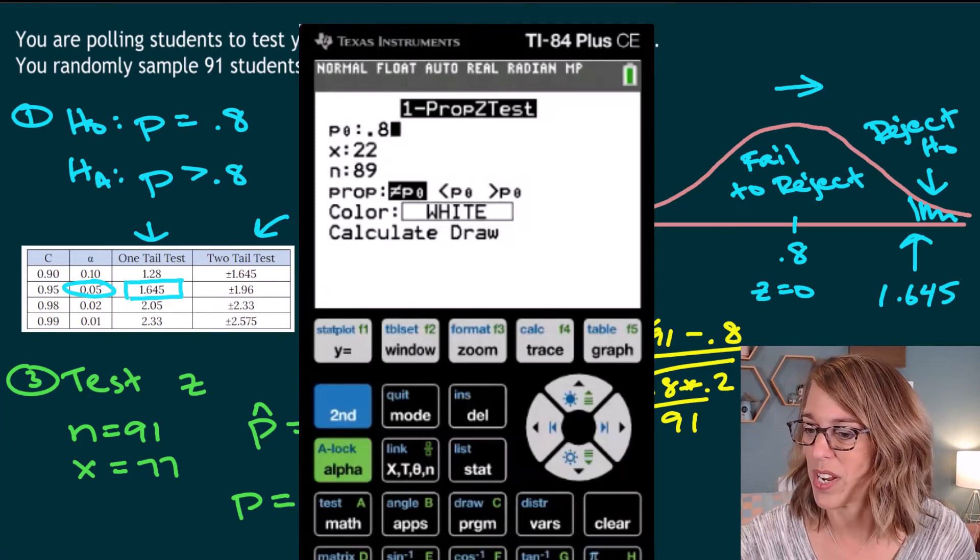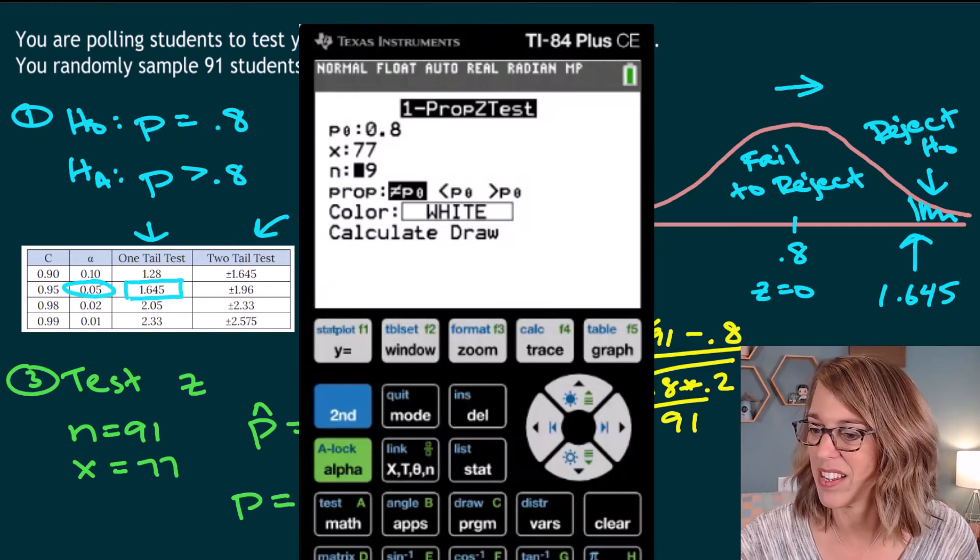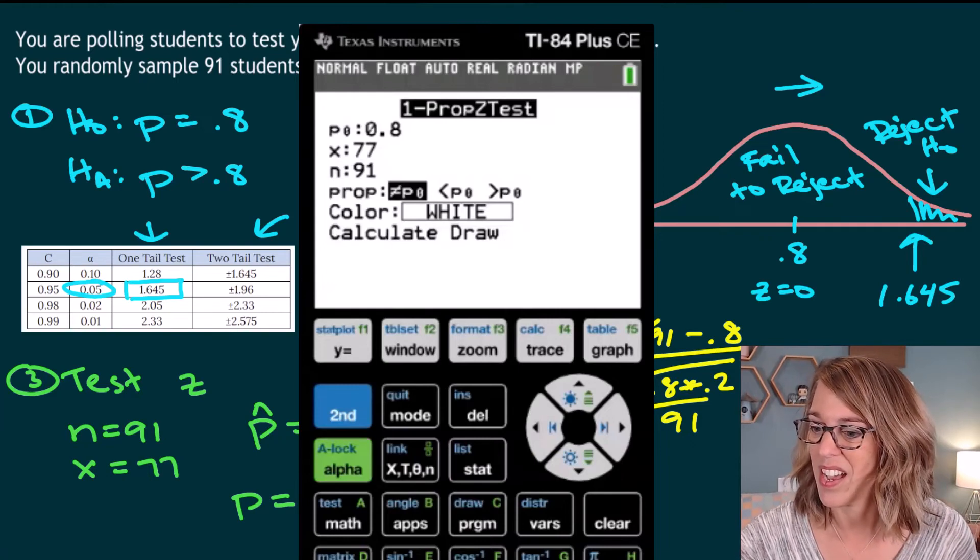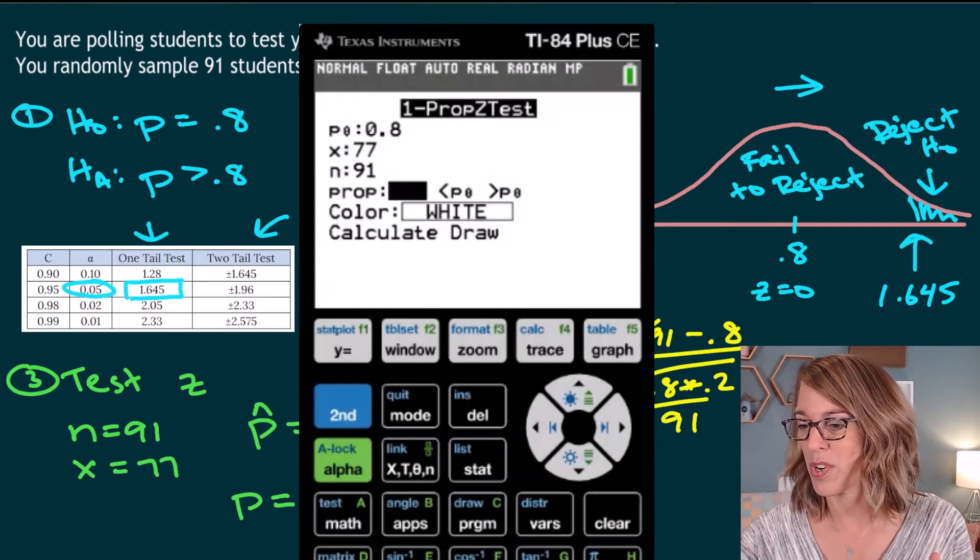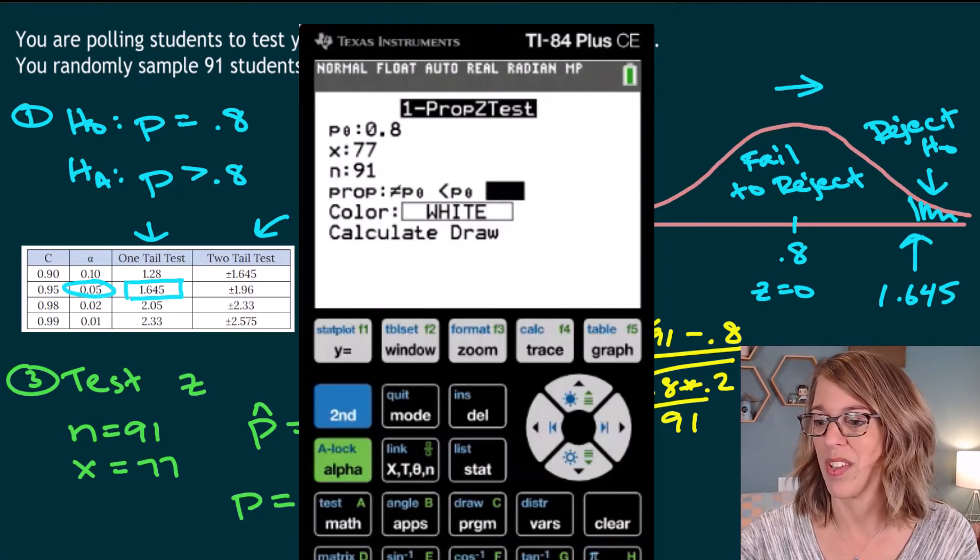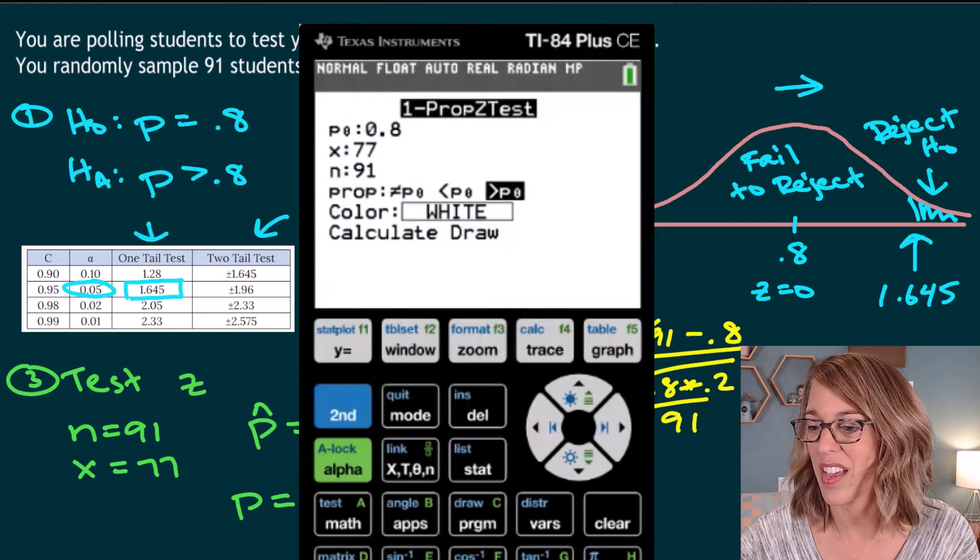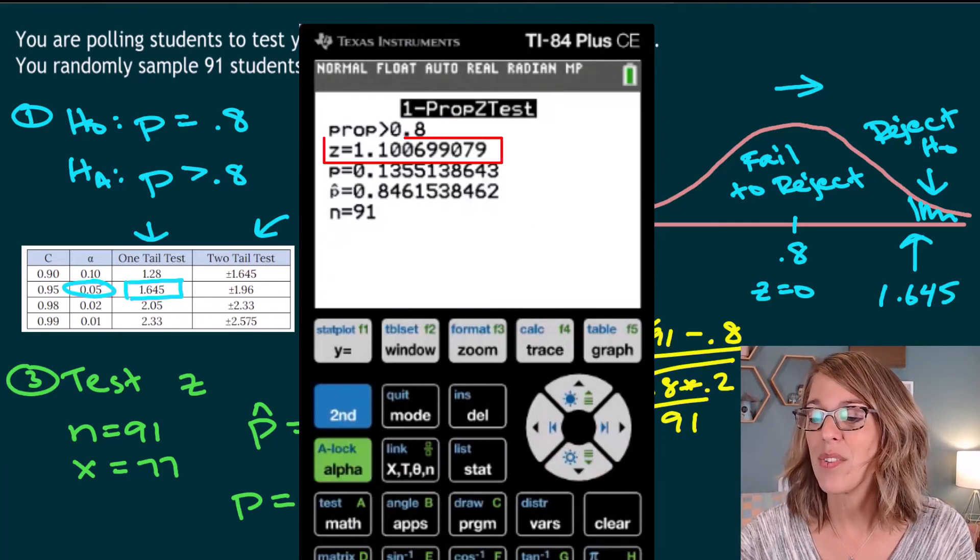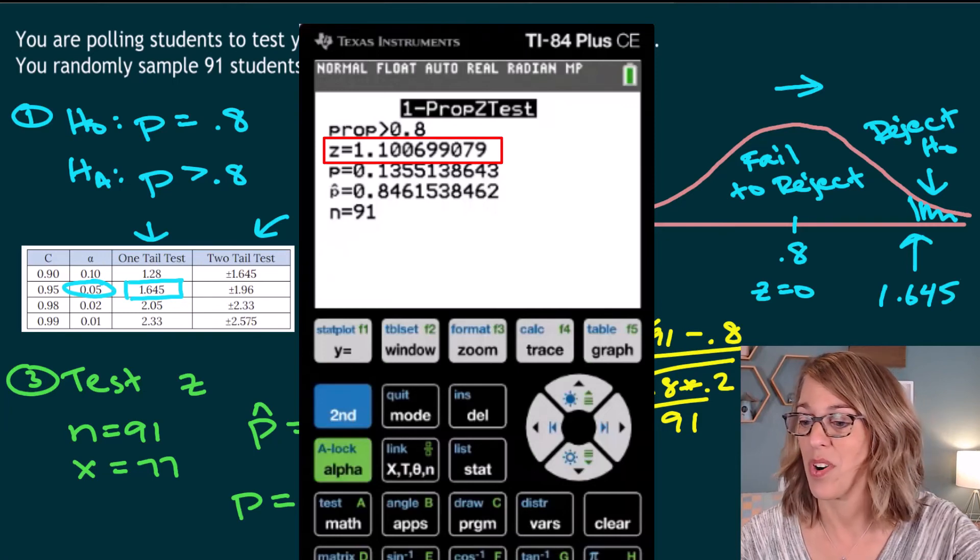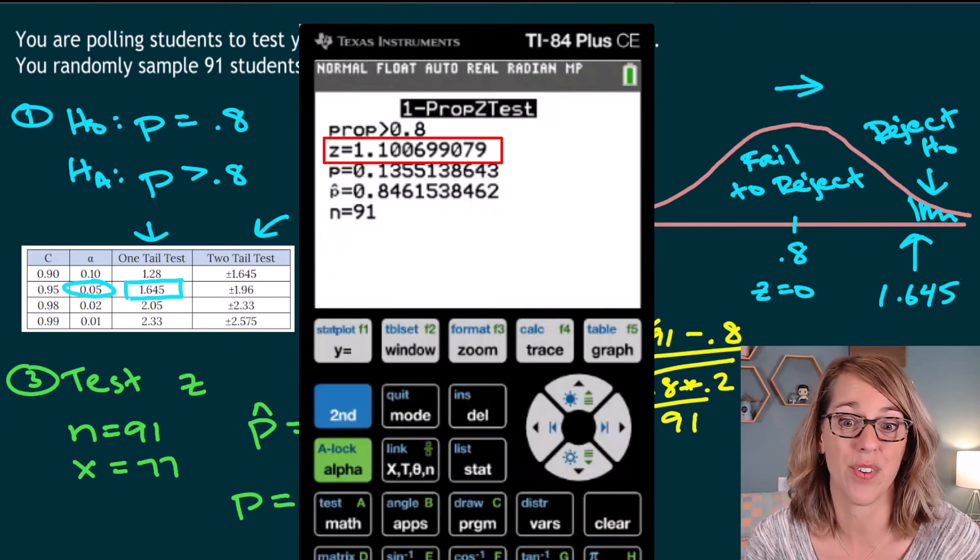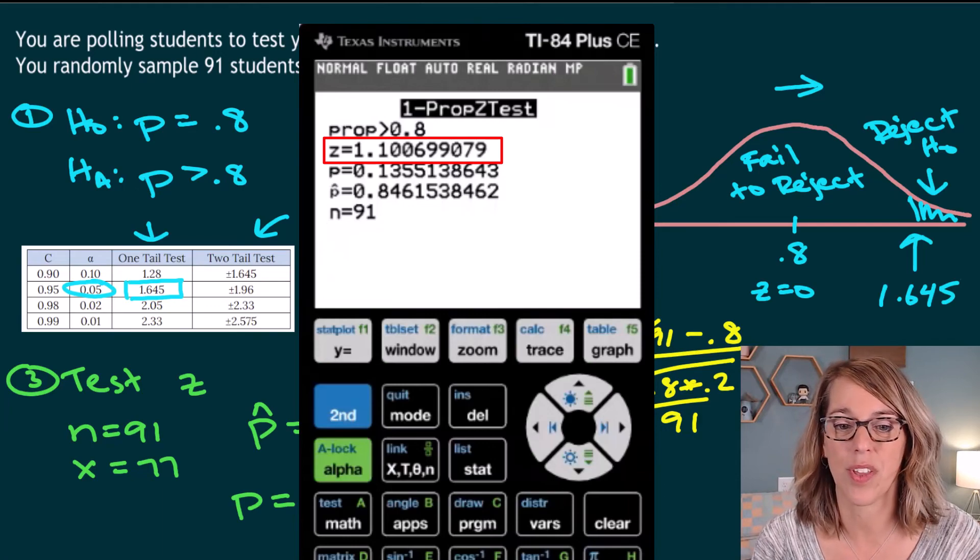That's going to be 0.8. X is 77 out of N, which is 91. We've got for the proportion, this is our alternative hypothesis. We have a greater than symbol there. So I'm going to put greater than. I'm just going to arrow down then to calculate, and we get our z-score. So that z-score of 1.1007 is the z-score that we get.